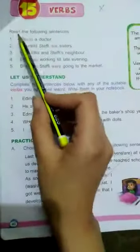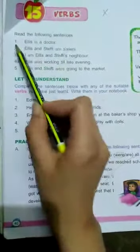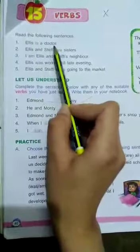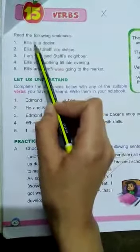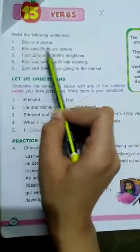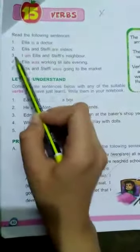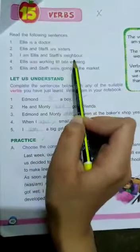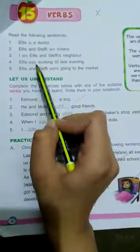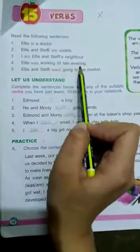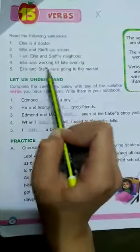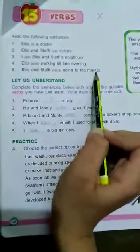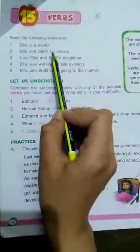Read the following sentences. Number one, Alice is a doctor. Which verb is used? Is. Number two, Alice and Steffy are sisters. Number three, I am Alice and Steffy's neighbor. Number four, Alice was working till late evening. Number five, Alice and Steffy were going to the market.